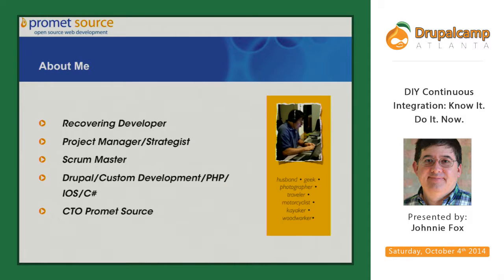A little bit about me. I am a recovering developer, so I get distracted easily — like shiny things in code, like launching into long descriptions about hierarchies or object references, which kind of conflicts with the next one: being a project manager trying to keep things on track. I'm a scrum master. I've done development on my own, and I am the CTO for ProMet Source, which is really where I became passionate about this subject of continuous development.